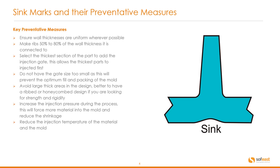Let's have a look at the key preventative measures to eliminate or avoid sink marks. Ensure wall thicknesses are uniform wherever possible. Make ribs 50% to 80% of the wall thickness it is connected to. Select the thickest section of the part to add the injection gate — this allows the thickest parts to be injected first. Do not have the gate size too small, as this will prevent the optimum fill and packing of the mold. Avoid large thick areas in the design; better to have a ribbed or honeycomb design if you are looking for strength and rigidity. Increase the injection pressure during the process, as this will force more material into the mold and reduce the shrinkage. Reduce the injection temperature of the material and mold.